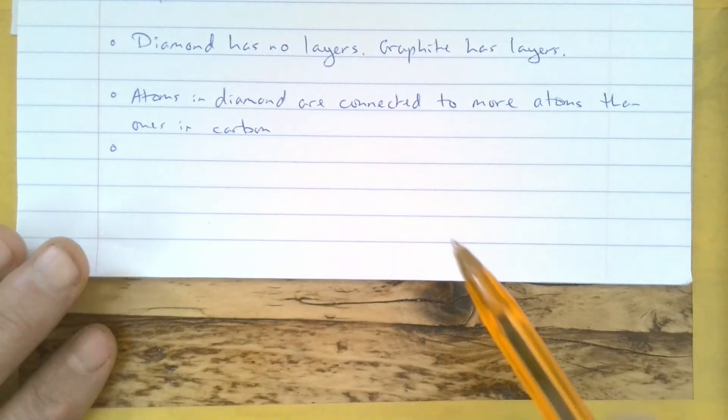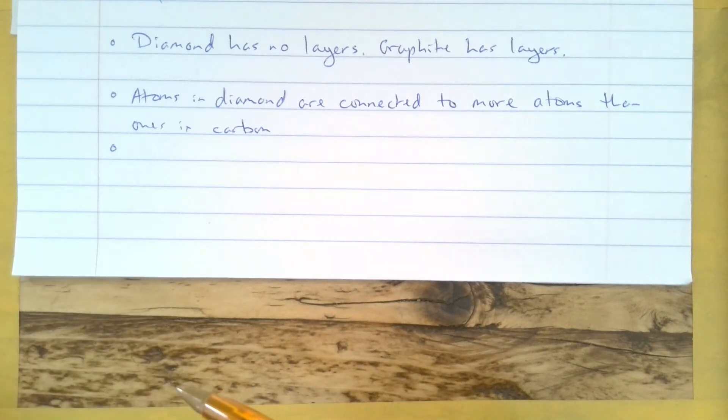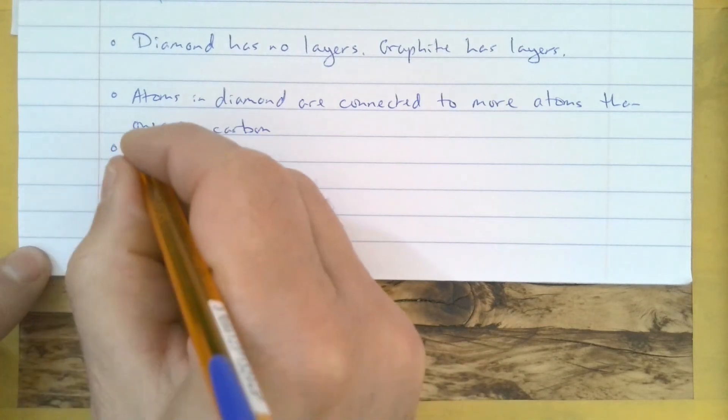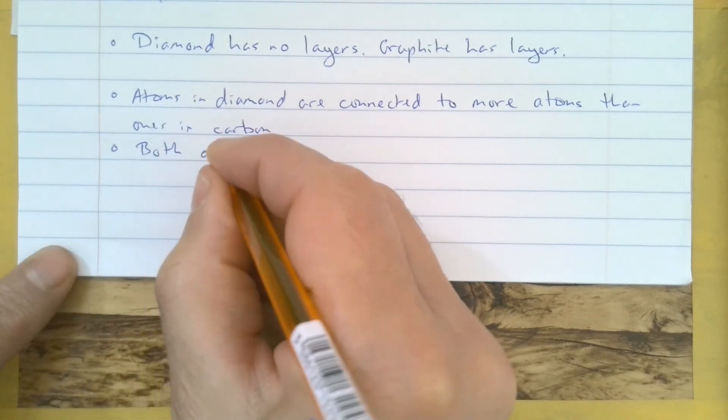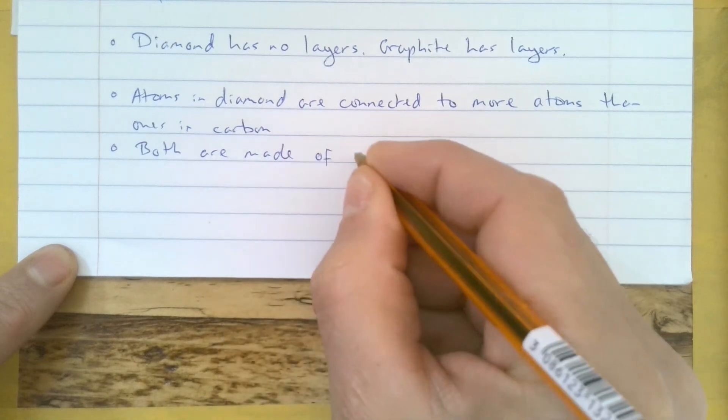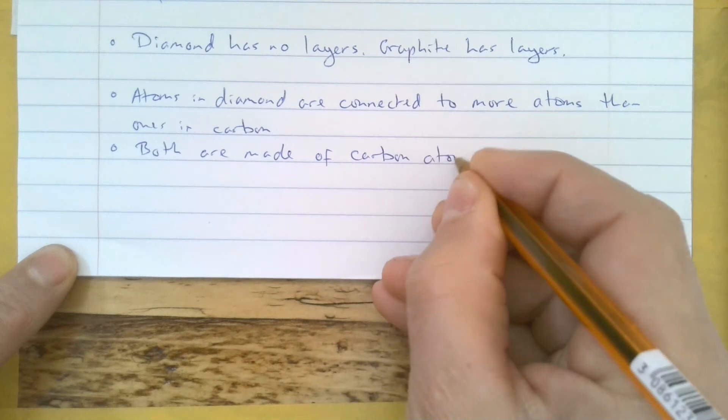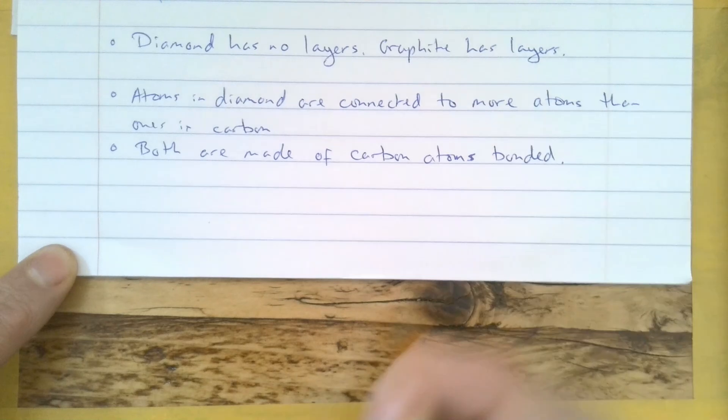So the thing I'm going to write here is I know that diamond and graphite are both called allotropes of carbon. They're both forms of carbon bonded in certain ways. So both are made of carbon atoms bonded.